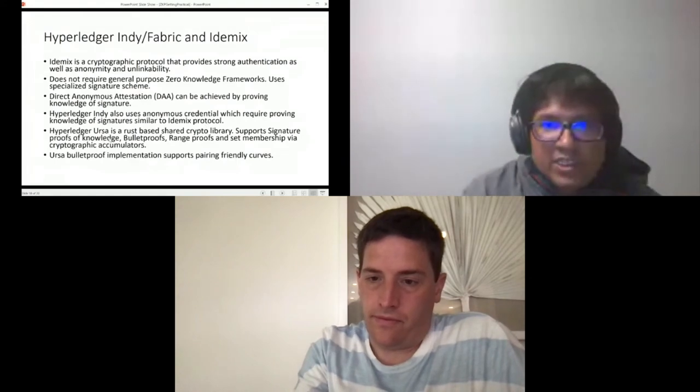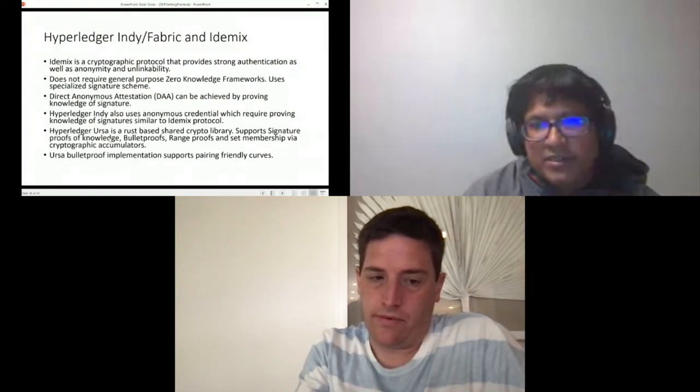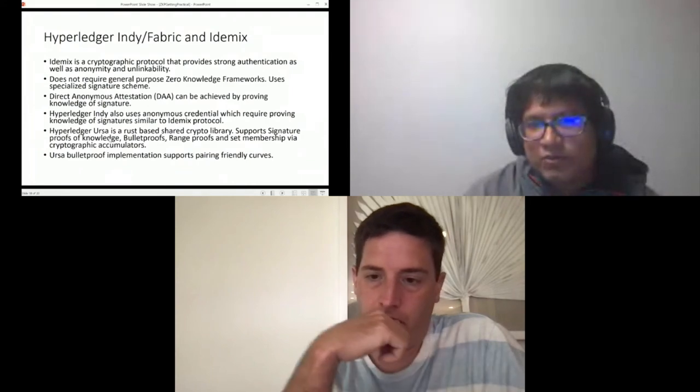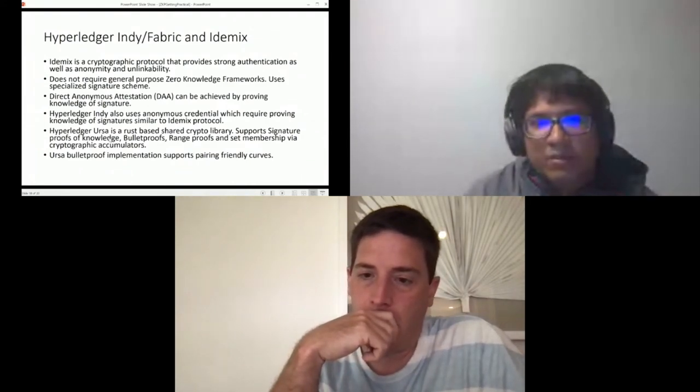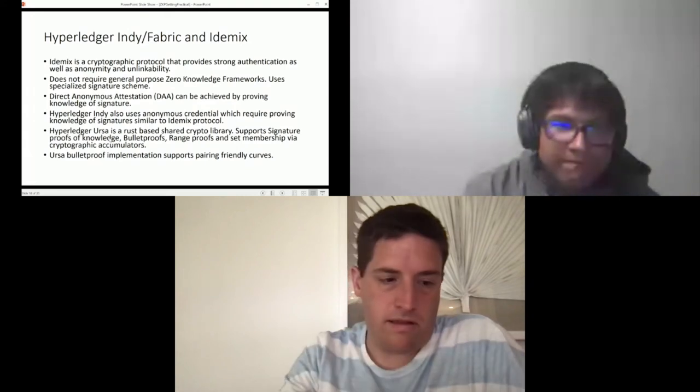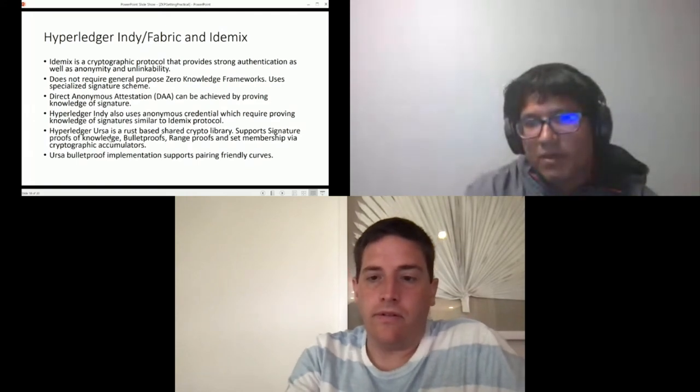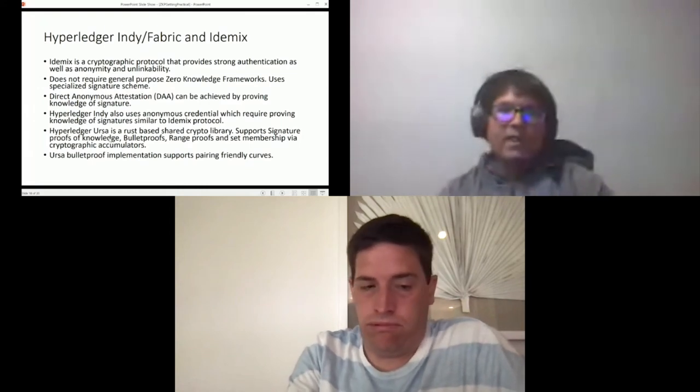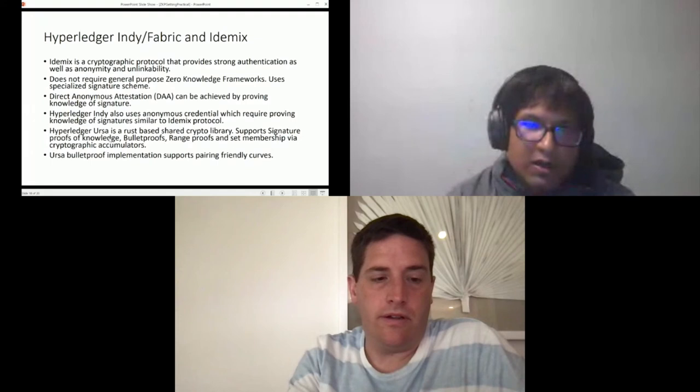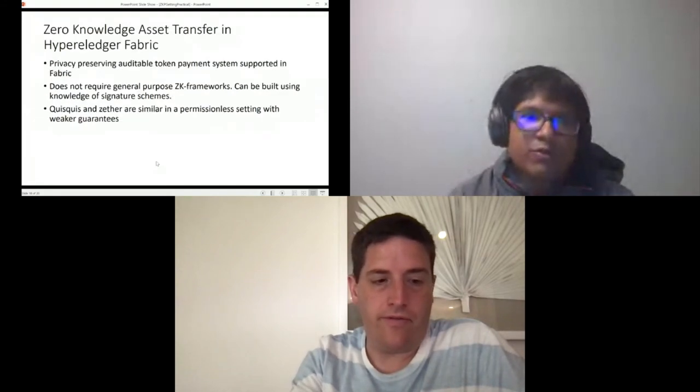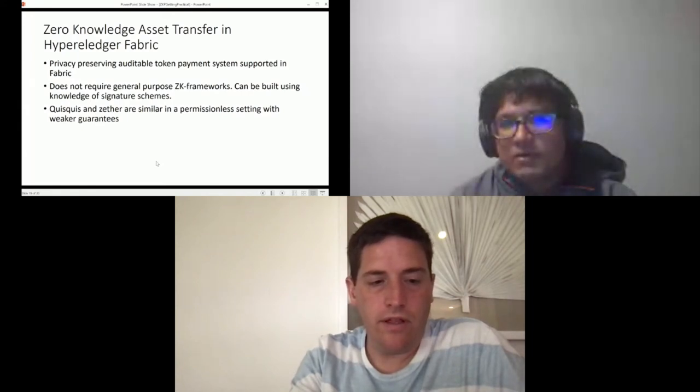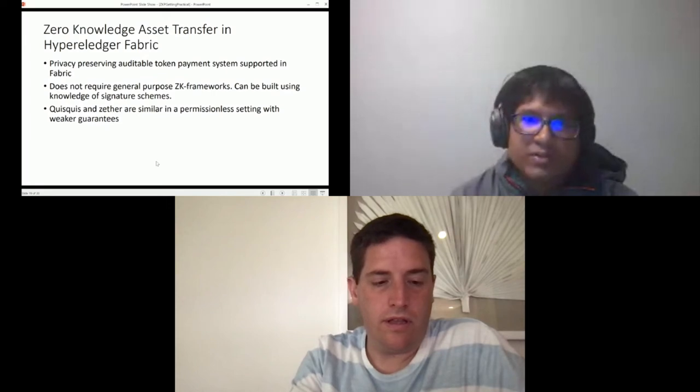Ursa is a shared crypto library. It currently supports signature proofs of knowledge, the Bulletproof range proofs and set membership by cryptographic accumulators. The Ursa Bulletproof implementation is a bit different than the Dalek one which was not supporting the pairing-friendly curves. In addition, Hyperledger Fabric also supports general asset transfer and this also doesn't require the general purpose framework and can be built using knowledge of signature schemes.